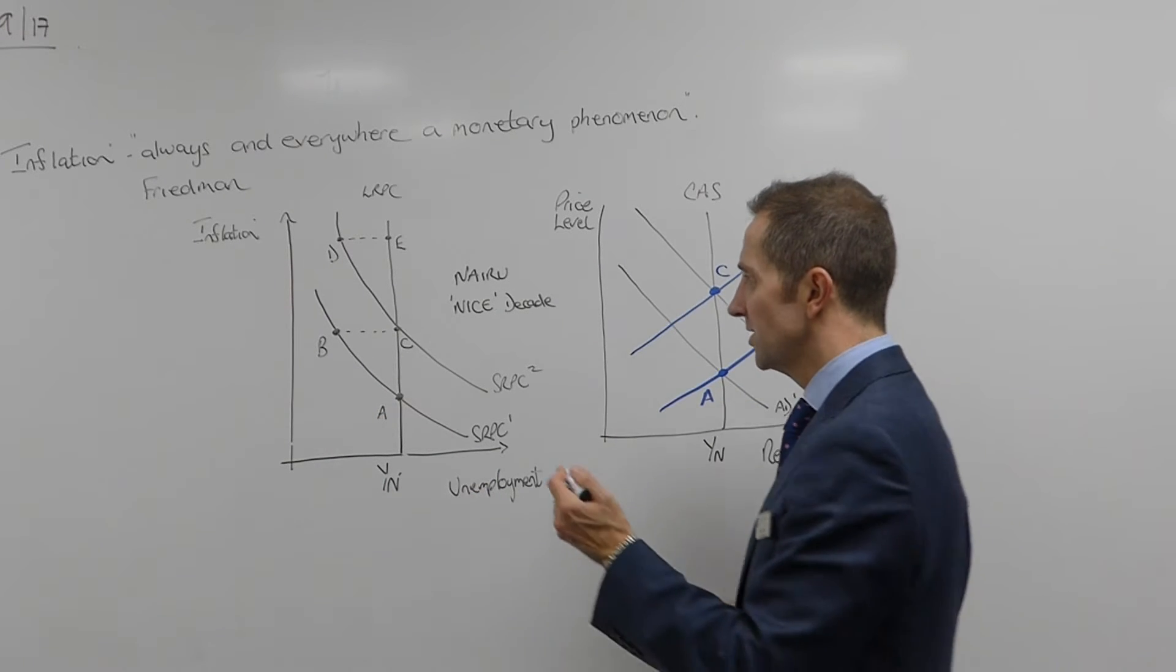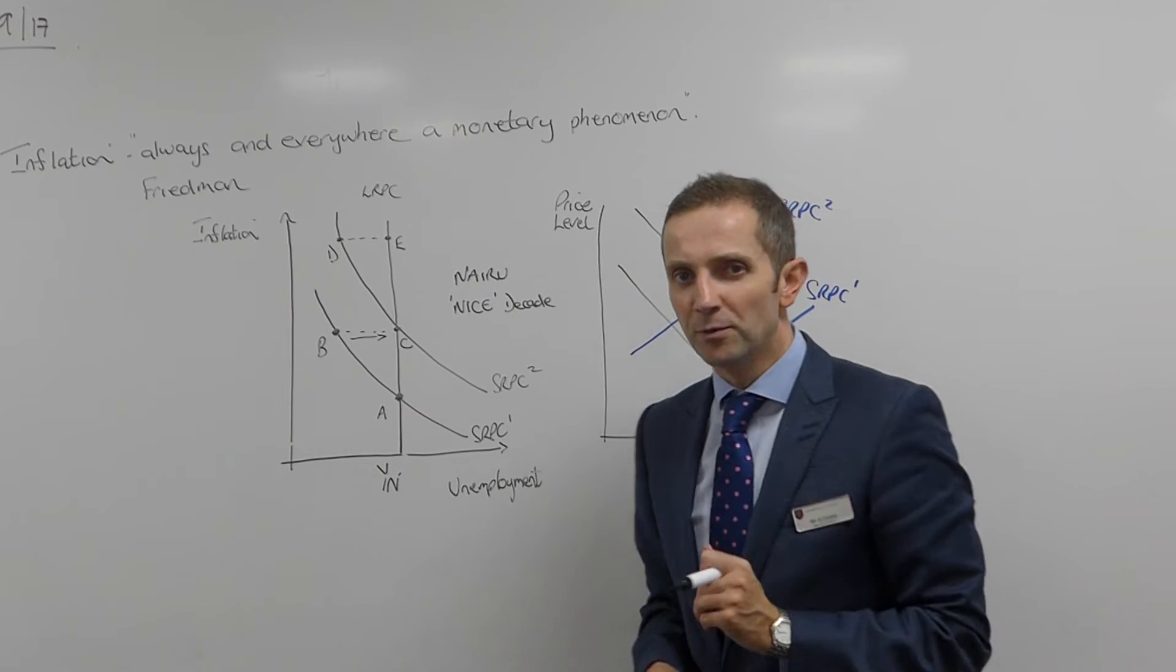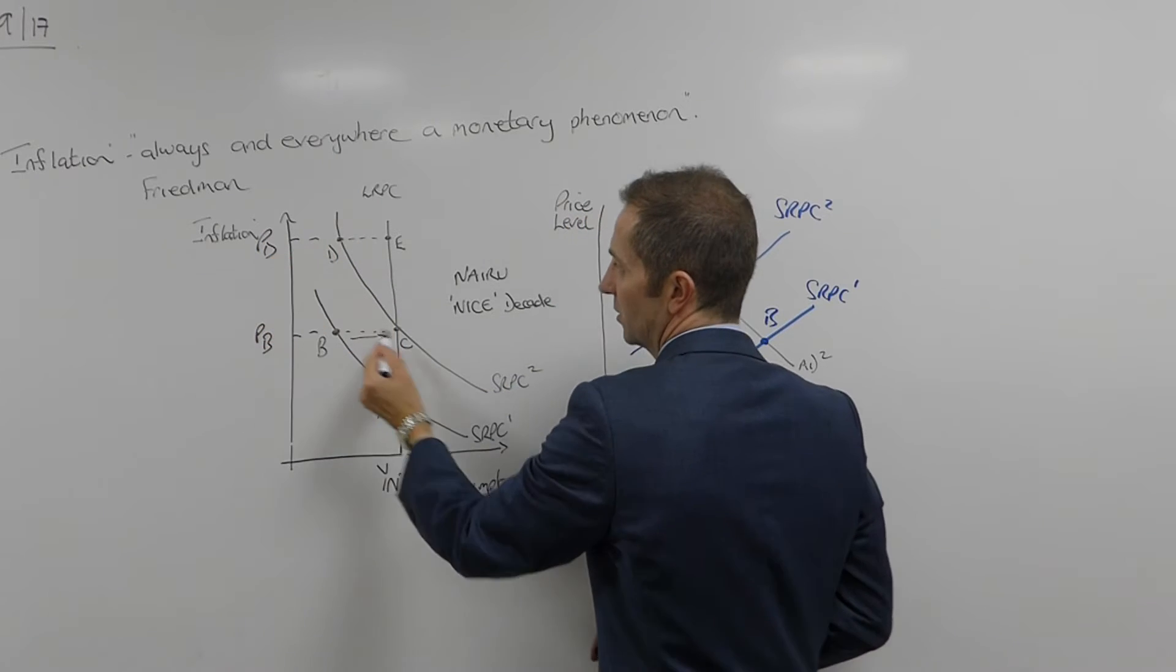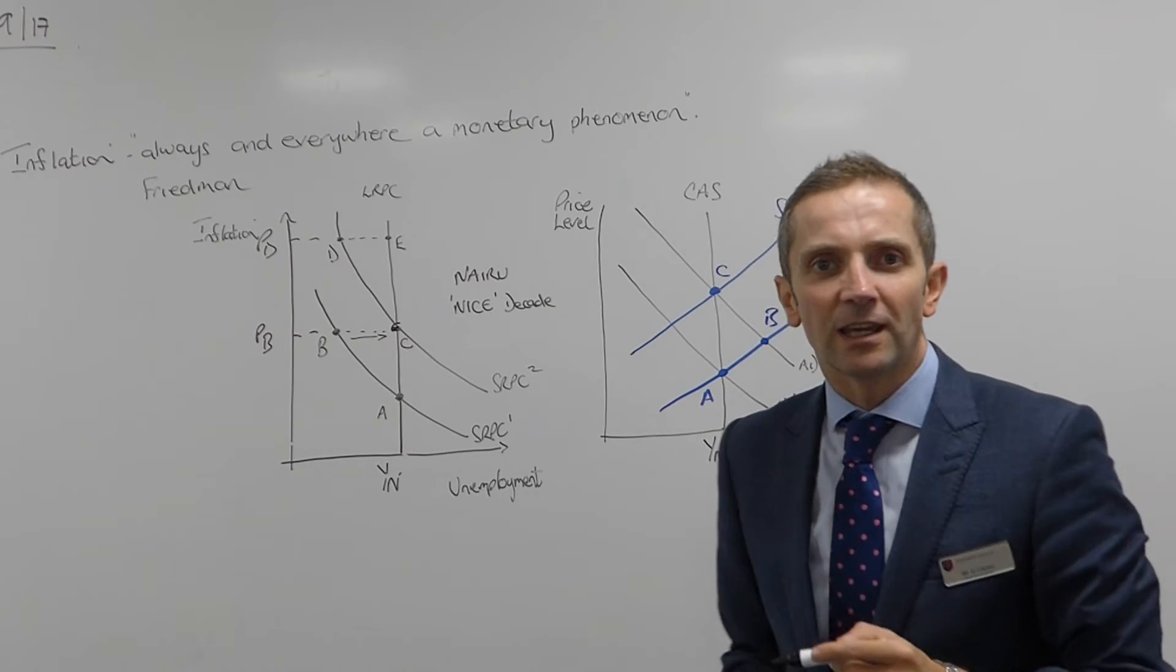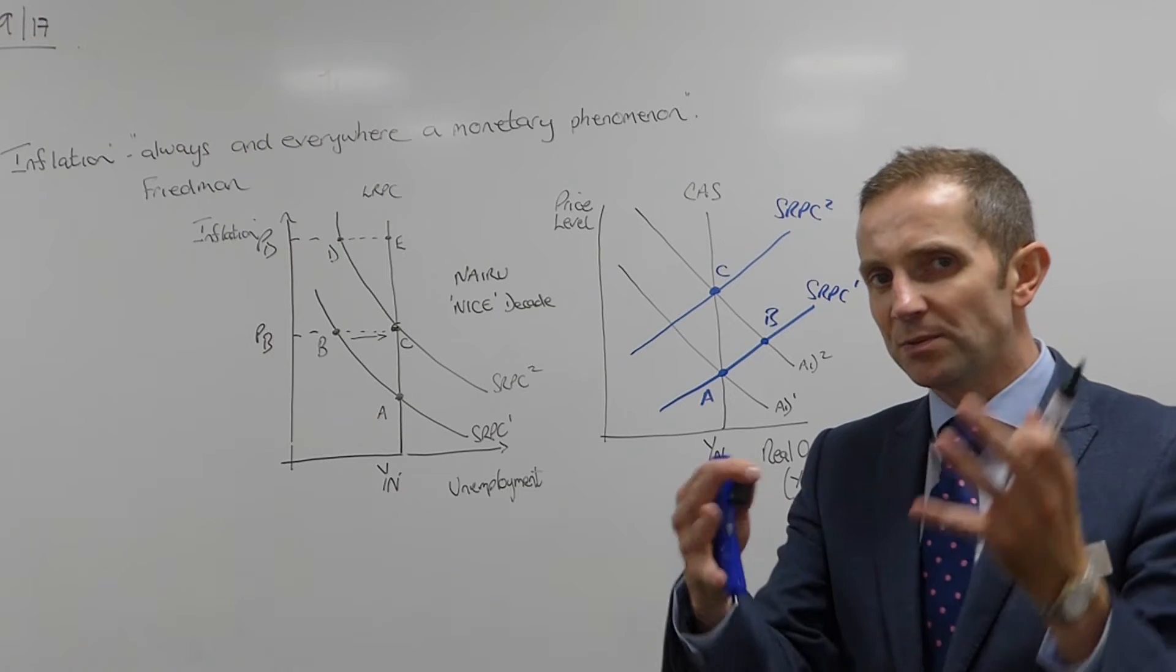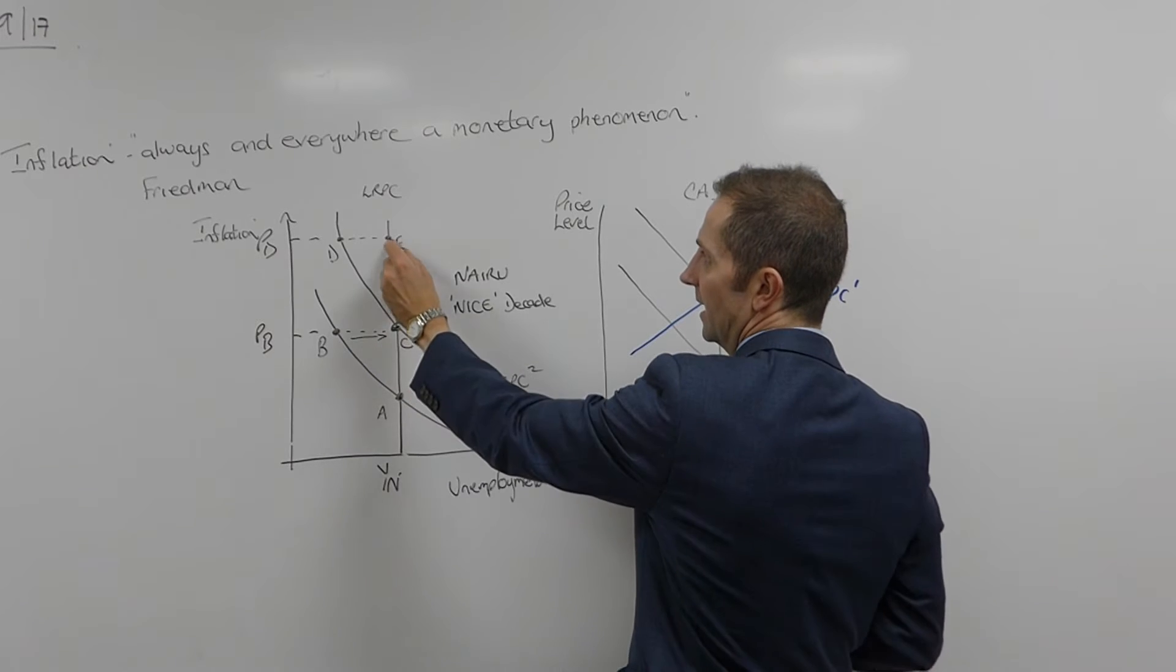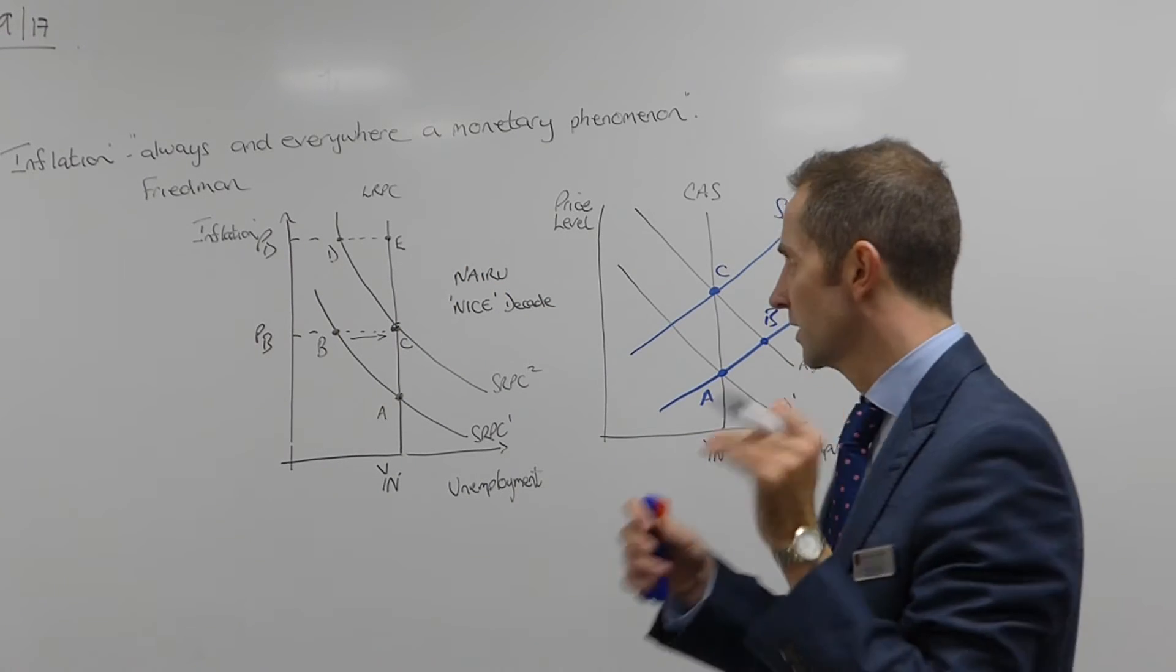But, in the long run, what happens is that the economy reverts back to its natural rate of unemployment, but the price level is rising all the time. So, here we're up to Pb, and then here we're up to Pd. So, if we were at C, land here, government tries to do the same thing again, all that happens is that we get inflation. Now, I've got explanations of that on previous videos, so I'll not go into that too much. But, you'll know that these points, A, C, and E, these are referred to as the NIRU, the non-accelerating inflation rate of unemployment.